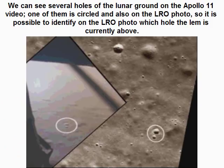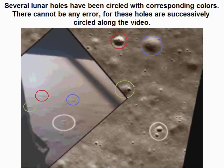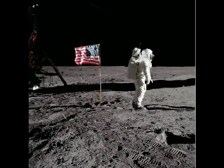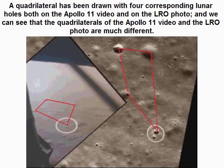We can see several holes on the lunar ground in the Apollo 11 video. One of them is circled and also identified on the LRO photo, so it is possible to identify on the LRO photo which hole the LEM is currently above. Several lunar holes have been circled with corresponding colors, and there cannot be any error as these holes are successively circled along the video. A quadrilateral has been drawn with four corresponding lunar holes both on the Apollo 11 video and on the LRO photo, and we can see that the two quadrilaterals are much different.